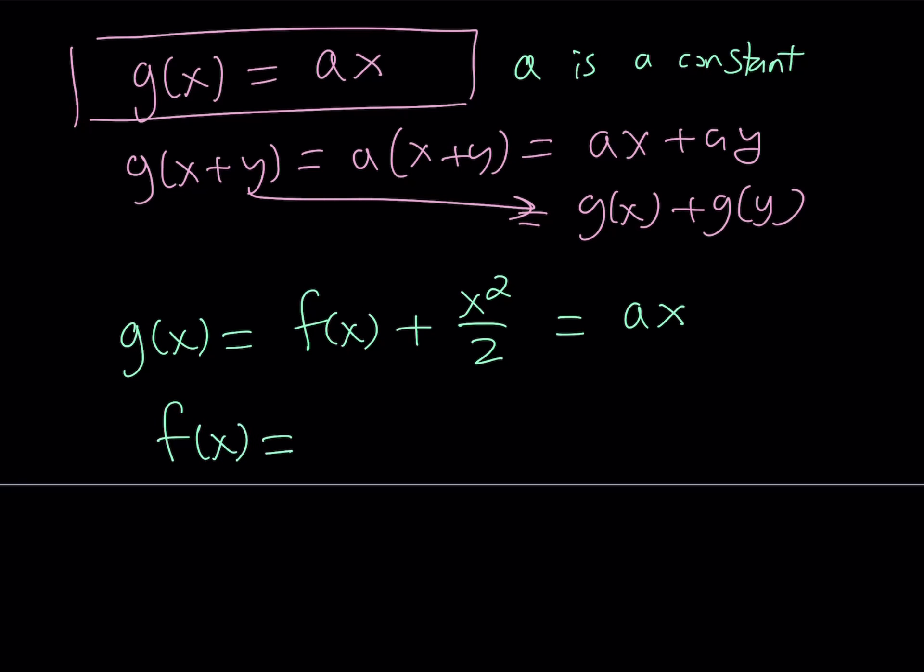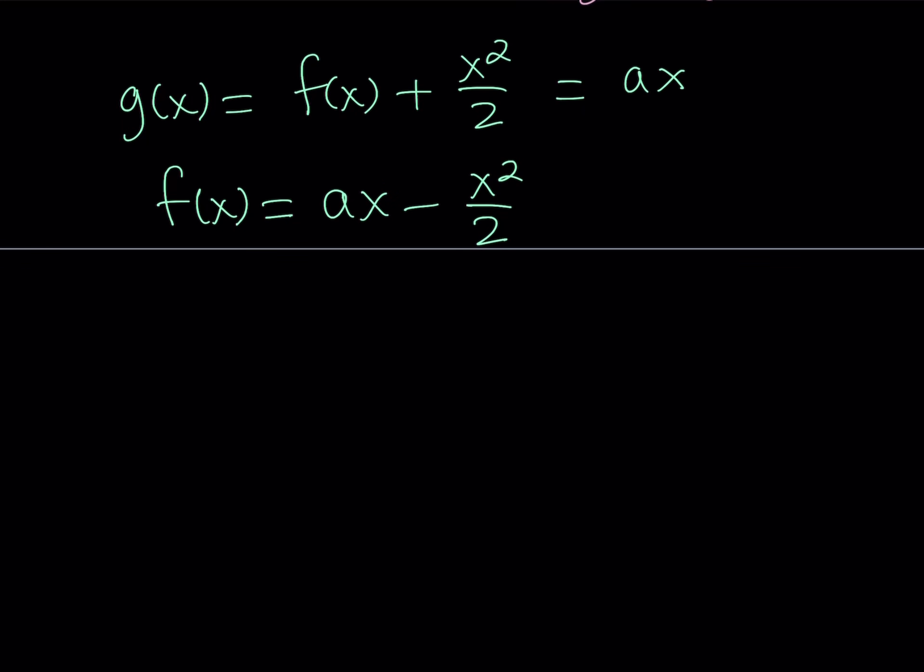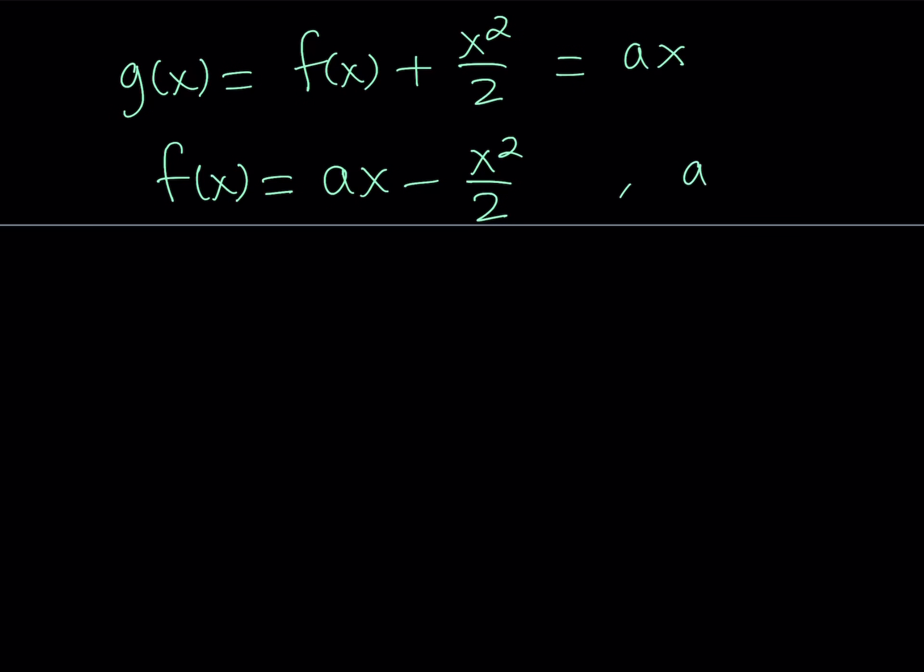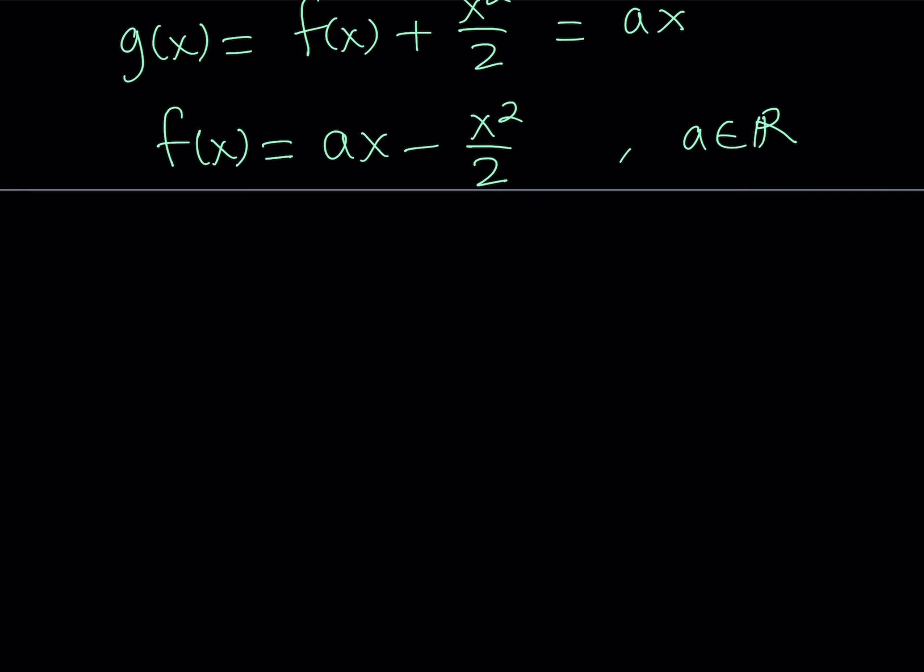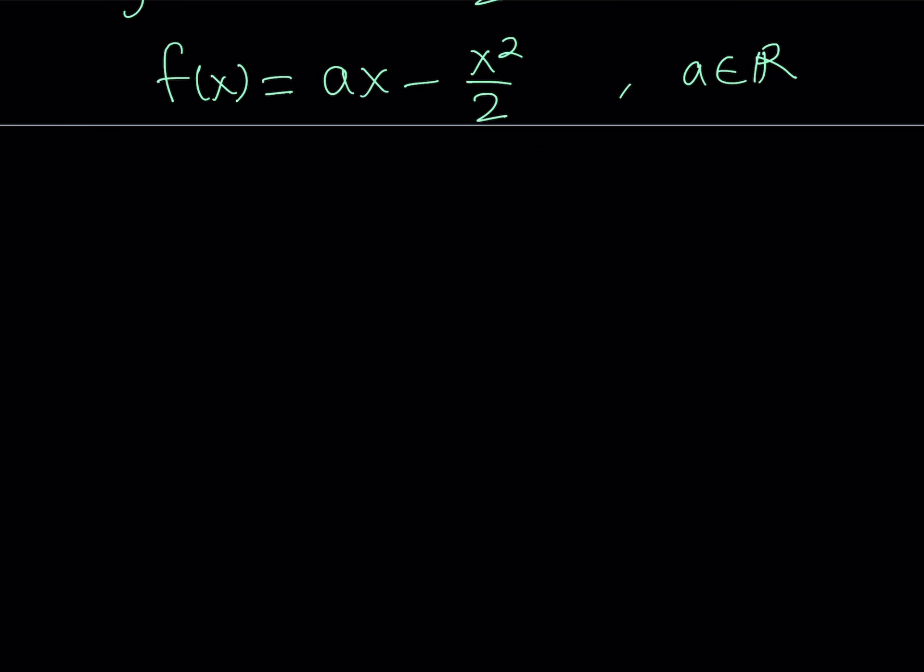And subtracting x squared over 2 from both sides is going to give us the answer, ax minus x squared over 2. So basically, if a is a constant, let's just say it's an element of the set of real numbers, then f of x is going to be in this form. And this brings us to the end of this video.